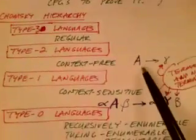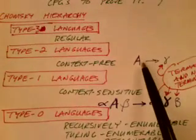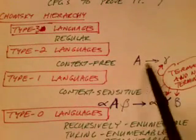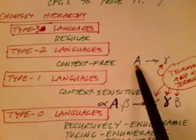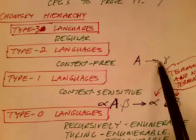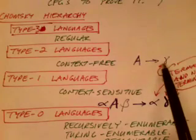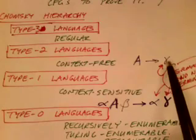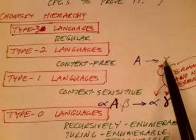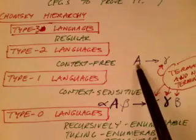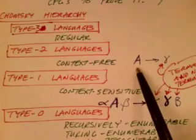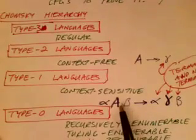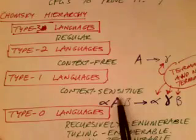With a context-free grammar, we have grammar rules that have terminals and non-terminals. Every rule takes the form of a non-terminal on the left-hand side, and on the right-hand side, a string of terminals and non-terminals — perhaps epsilon, perhaps only terminals, perhaps only non-terminals. The key thing is that on the left-hand side there's only a single non-terminal symbol. In general, we can talk about context-sensitive grammars, and those grammar rules allow something slightly different.